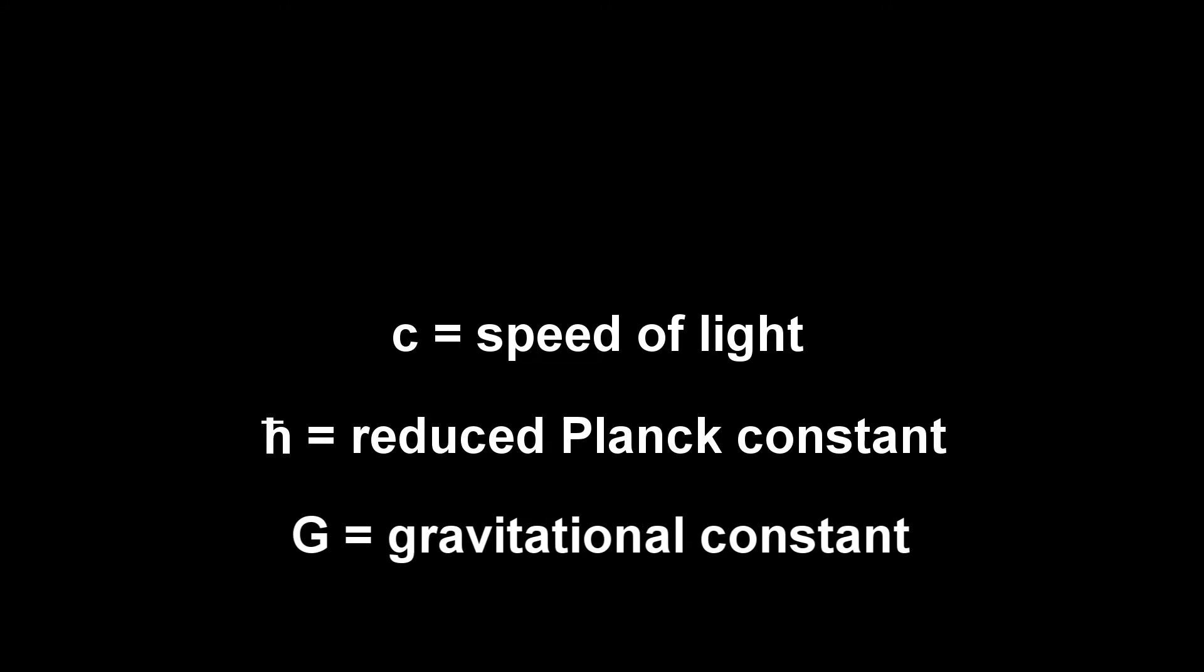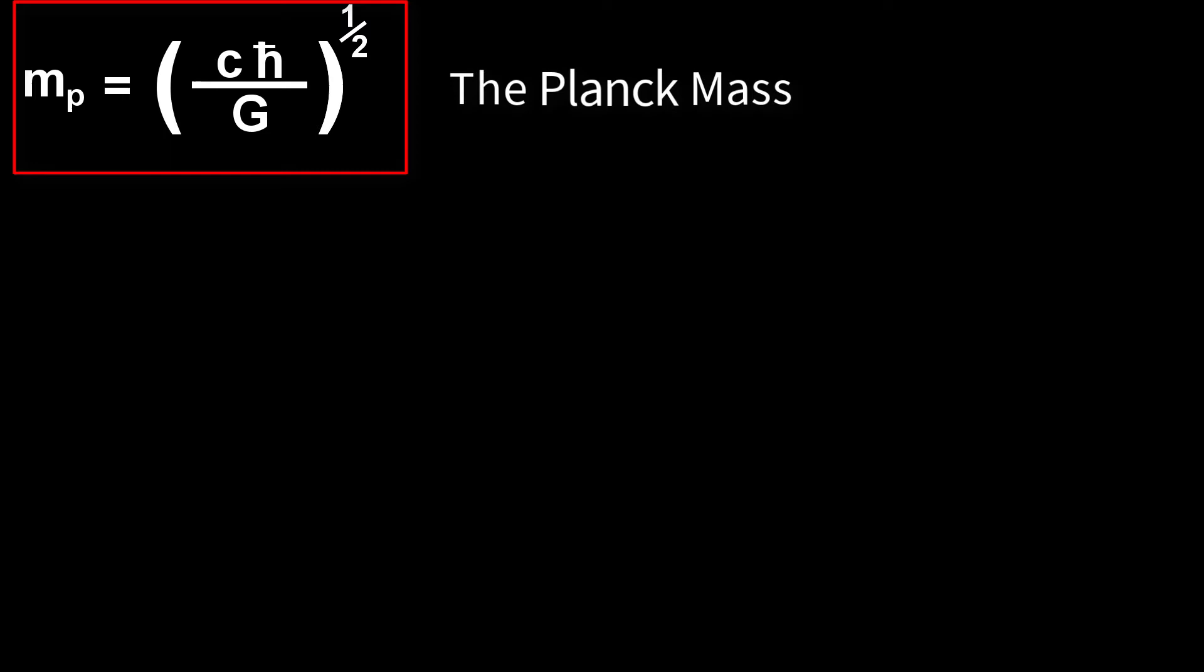Planck obtained this mass by manipulating his preferred universal natural constants, C, H-bar and G. He arranged the constants that yield the Planck mass in precisely this way because this expression has units of mass. So keep an eye on the units as we calculate the Planck mass. We begin with Planck's formula and the units of the constants. We put in the values of the constants.